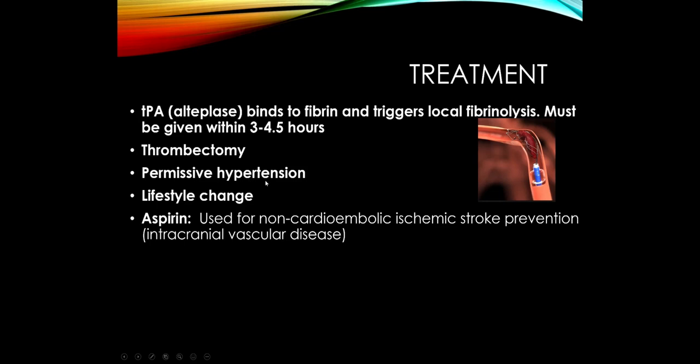When someone has a stroke, blood pressure almost always goes up. Patients in the ER with a stroke have high blood pressure — this is the brain's normal response to try to increase perfusion to the ischemic area. So when admitting someone with a stroke, we don't right away try to normalize blood pressure; that can actually be harmful. We let it run high for at least 24 hours, then gradually bring it down. Remember that more than 90% of ischemic strokes are due to completely modifiable lifestyle factors, so once the acute phase is managed we focus heavily on patient education to prevent recurrence.